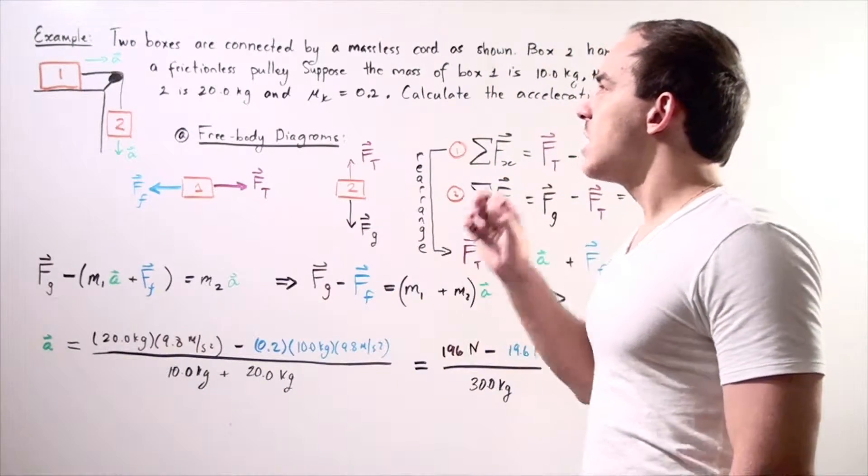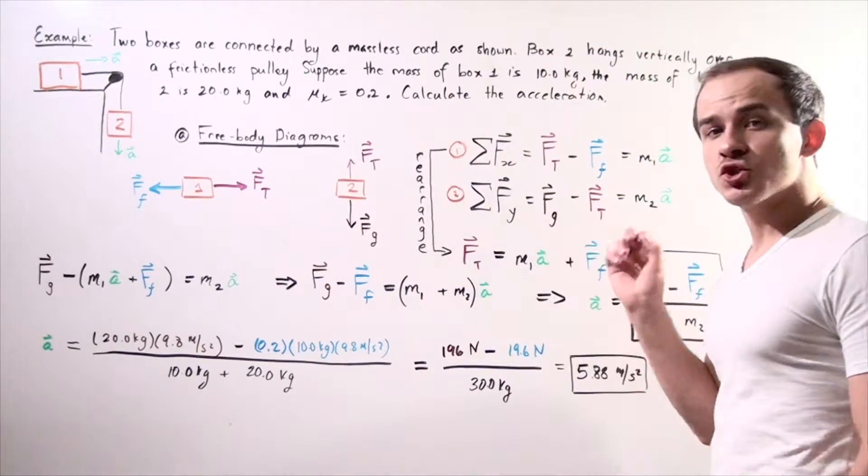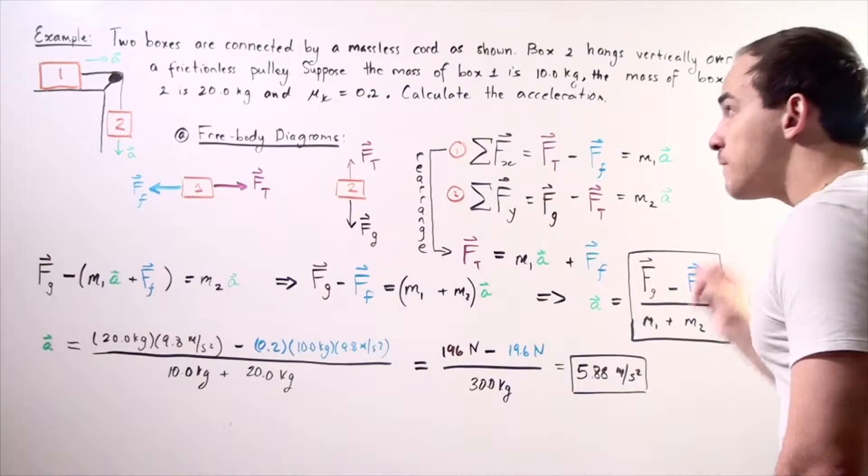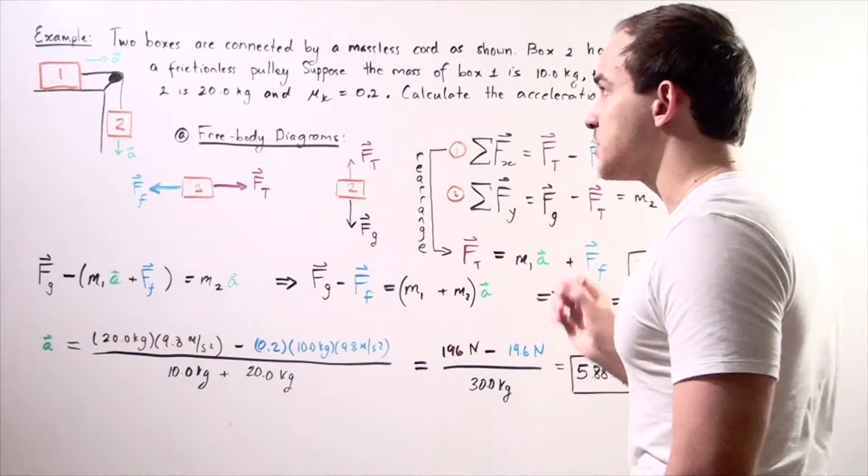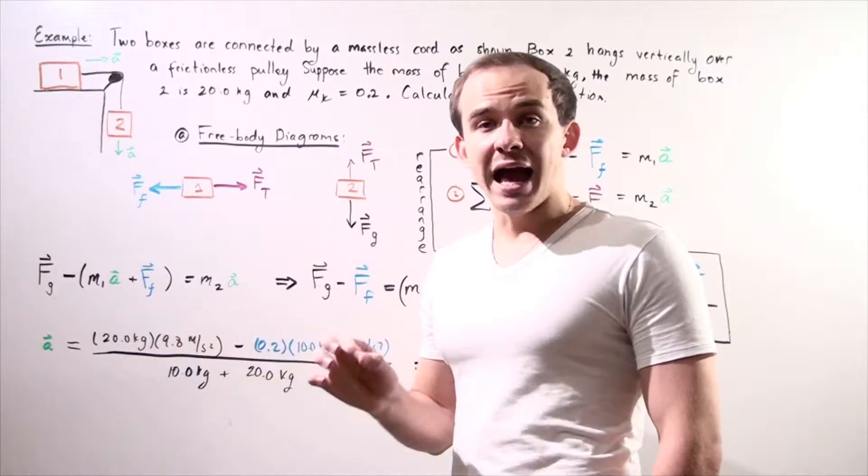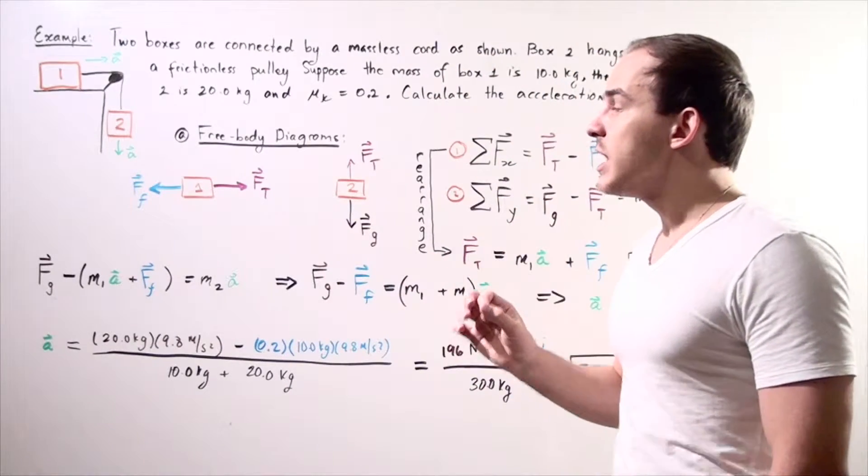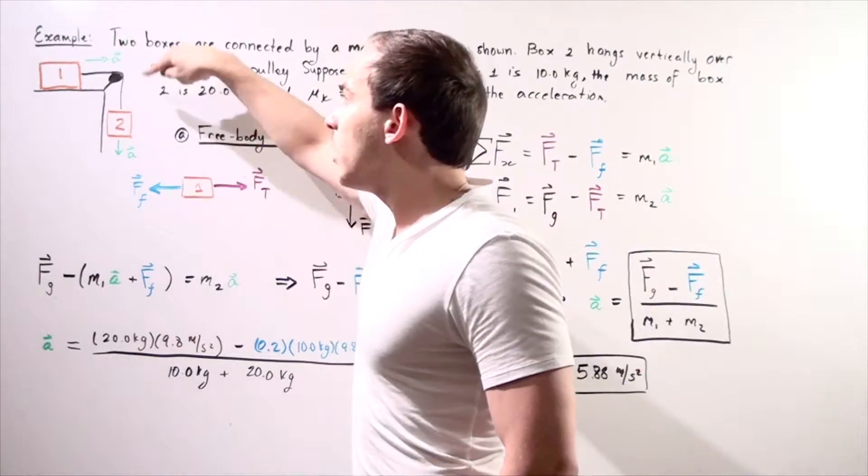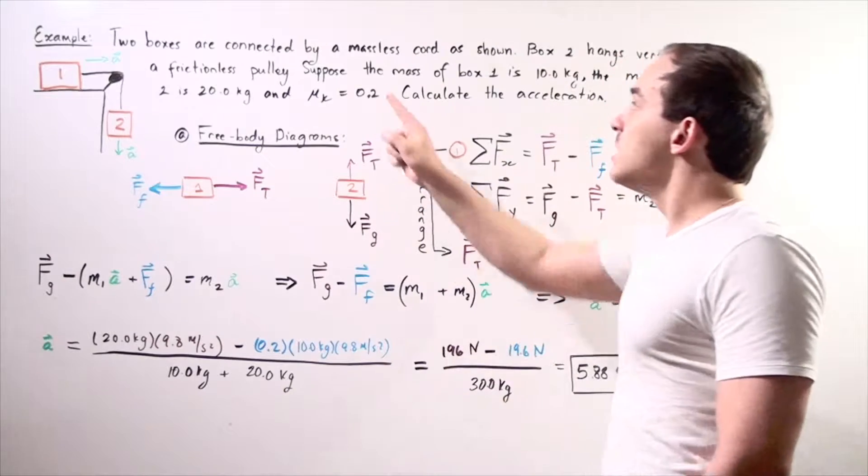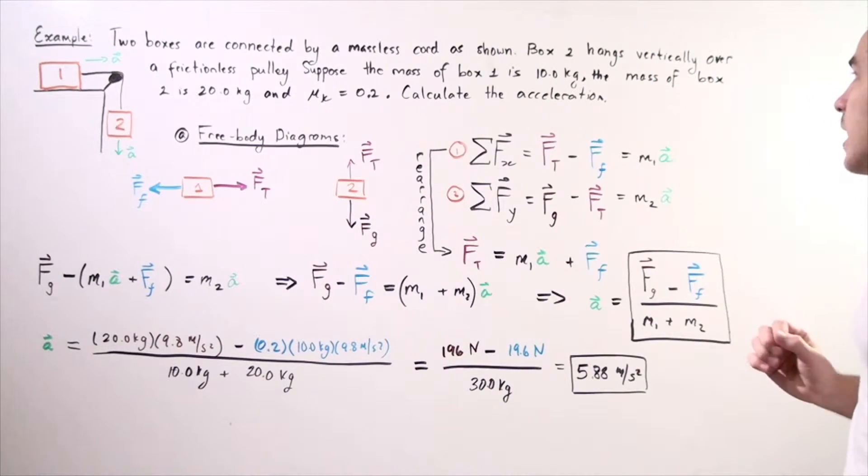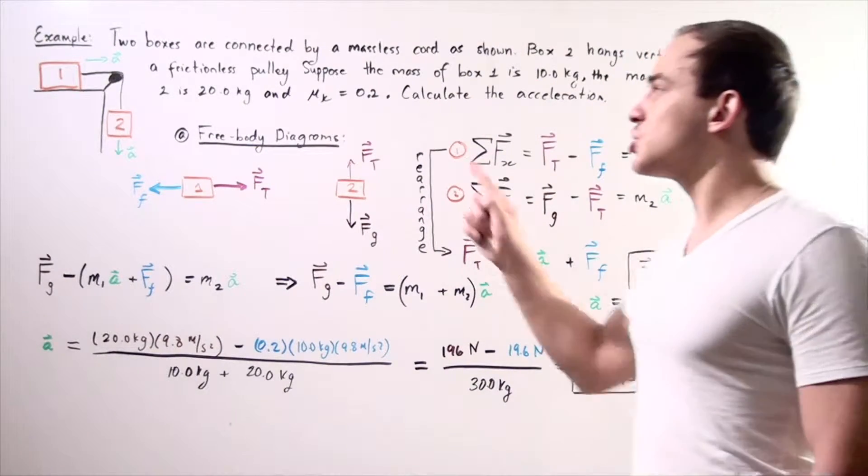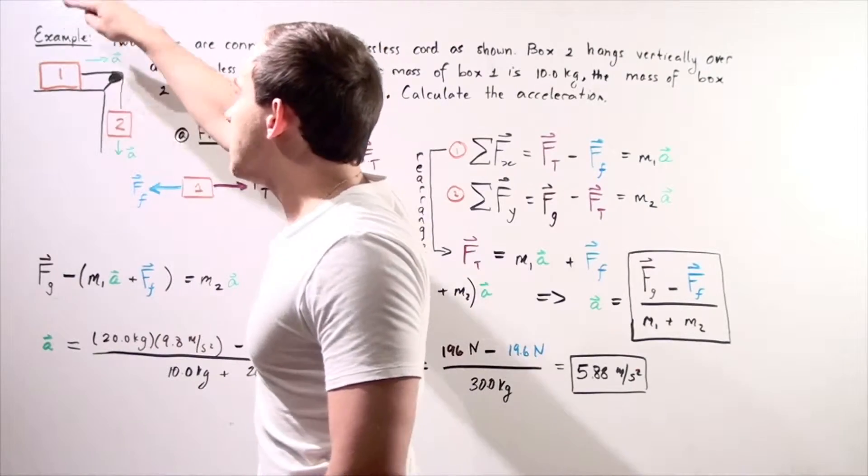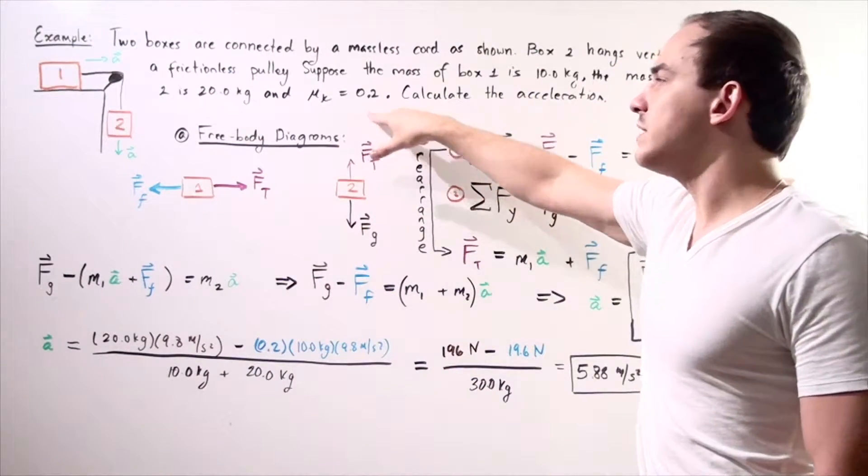Let's suppose we have two boxes that are connected by a massless cord as shown in the diagram to the left. Box number two hangs vertically over a frictionless pulley. Neglecting friction and mass allows us to make the assumption that our force remains undiminished. The force along any point in the cord is exactly the same. Suppose the mass of box one is 10 kilograms, the mass of box two is 20 kilograms, and the coefficient of kinetic friction between the surface on which box one is located is 0.2.